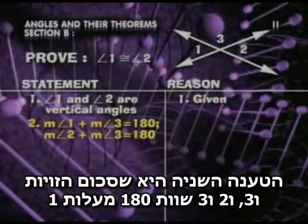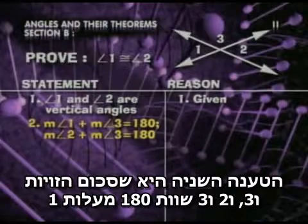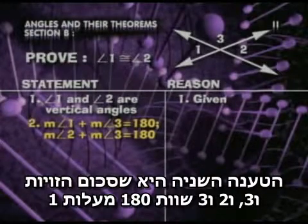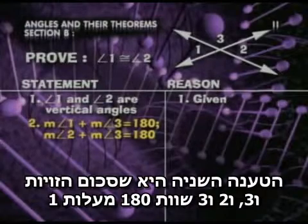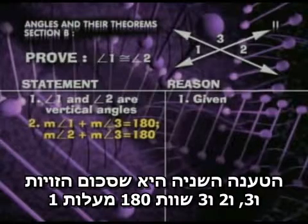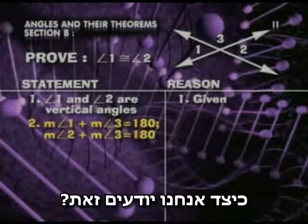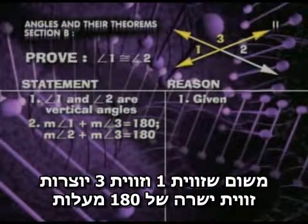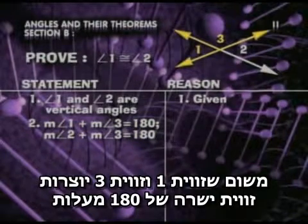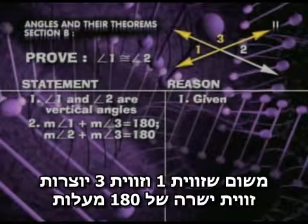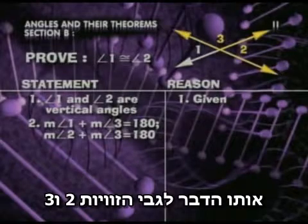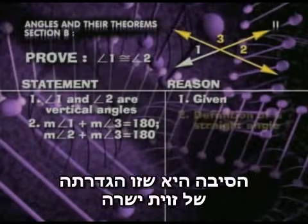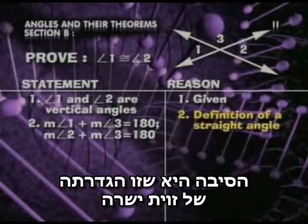Our second statement is: the sum of the measures of angle 1 and angle 3 equals 180, and the sum of the measures of angle 2 and angle 3 equals 180. How do we know this? Because angle 1 and angle 3 form a straight angle, which measures 180 degrees. Ditto for angle 2 and angle 3. Our reason: this is the definition of a straight angle.